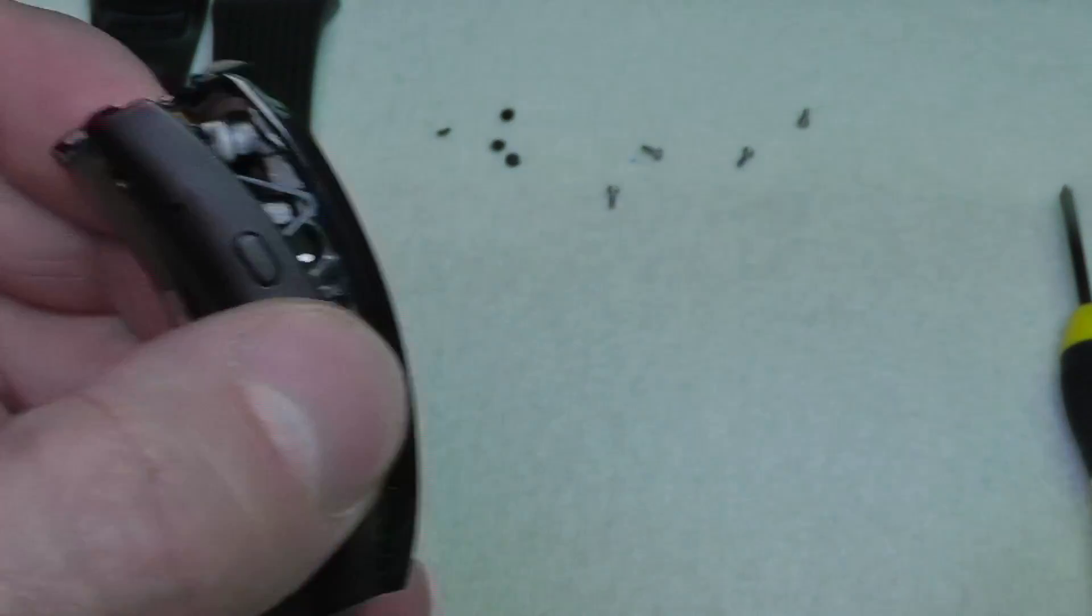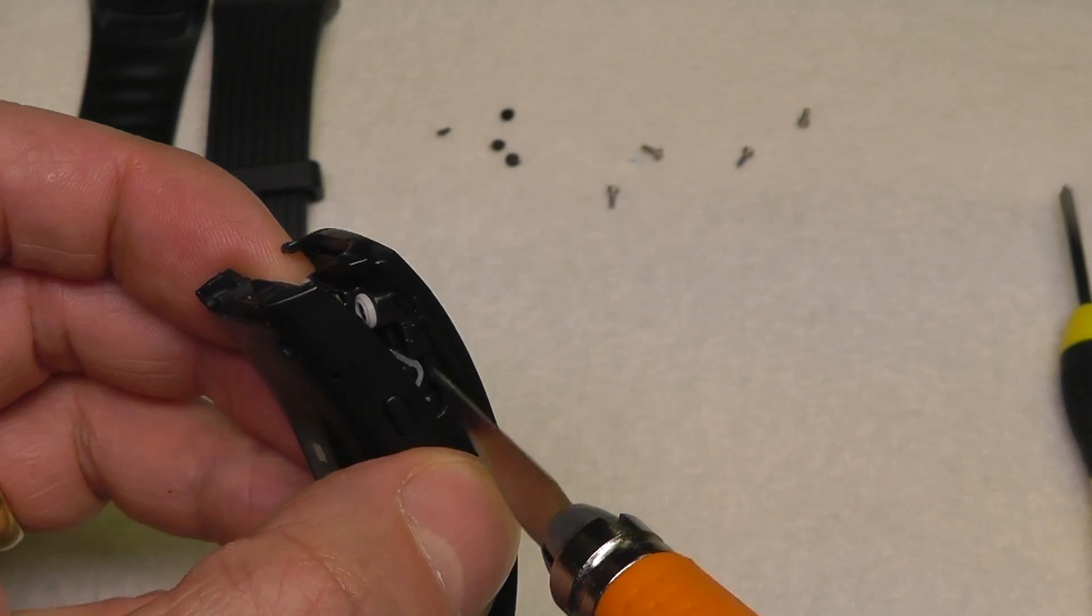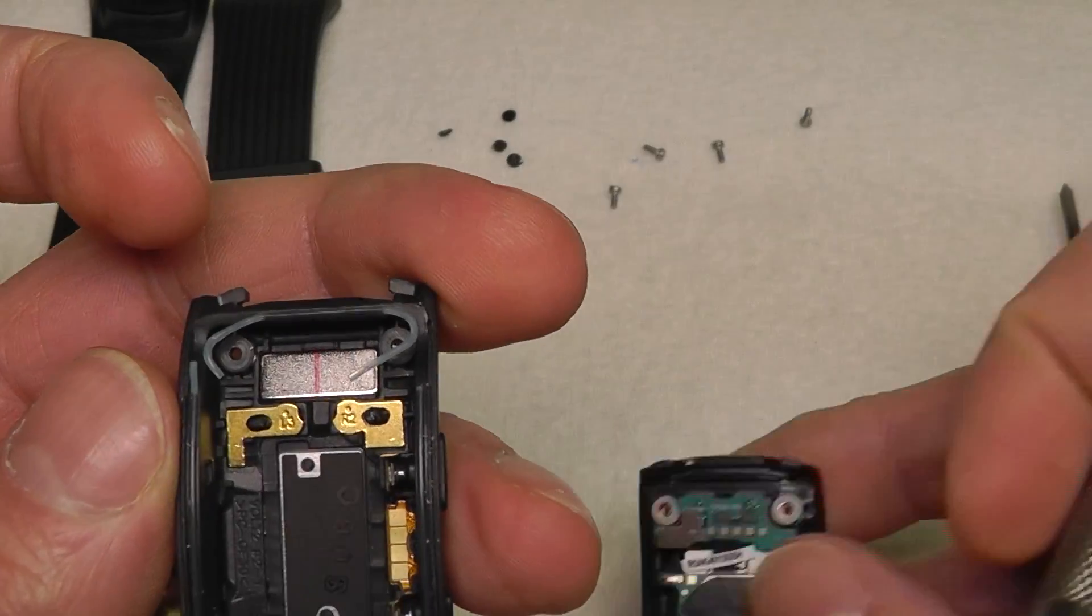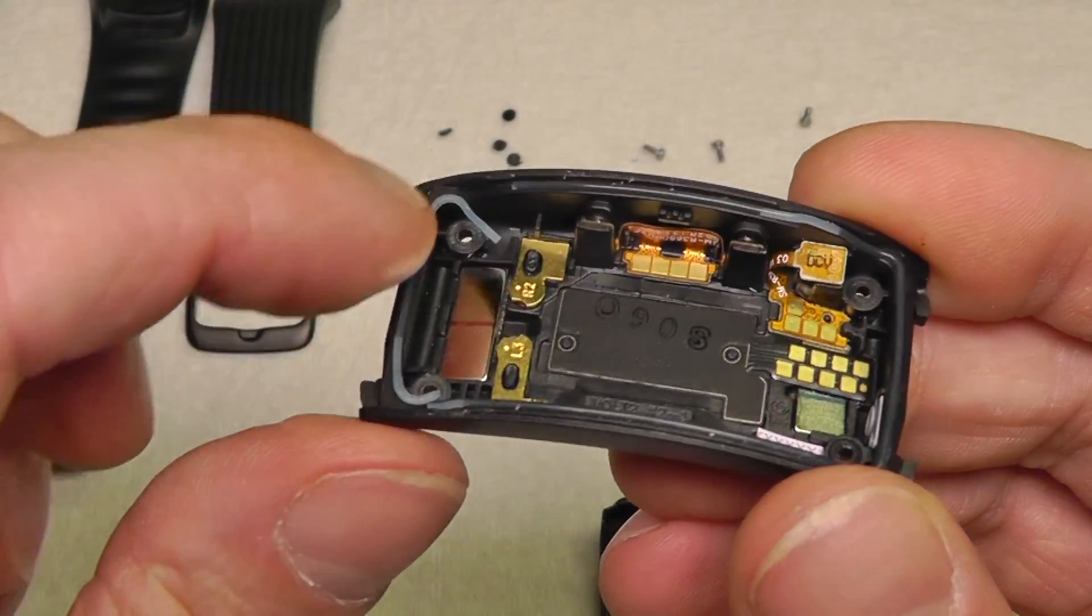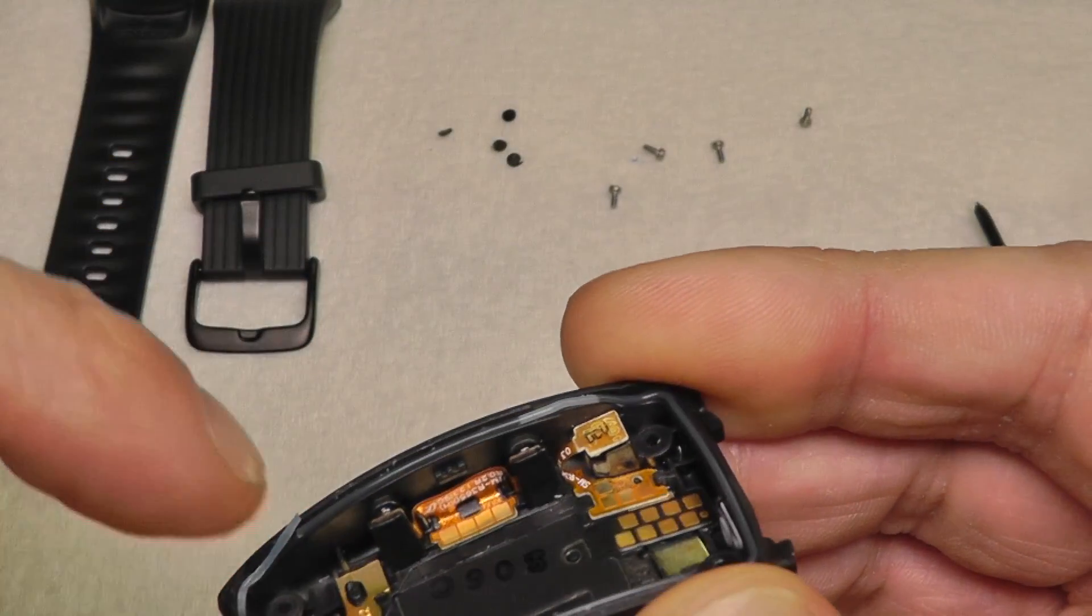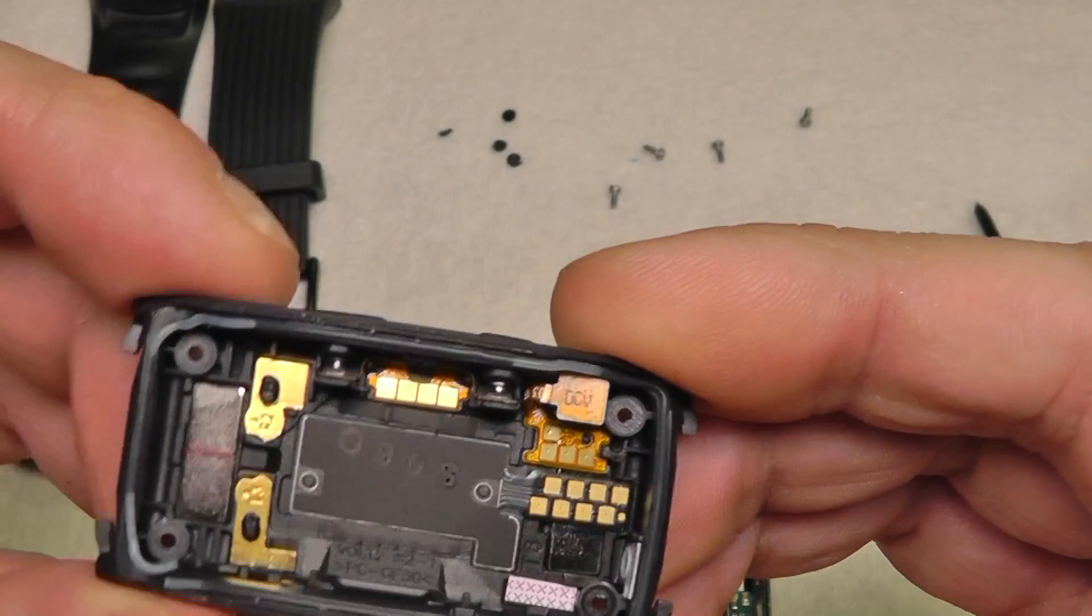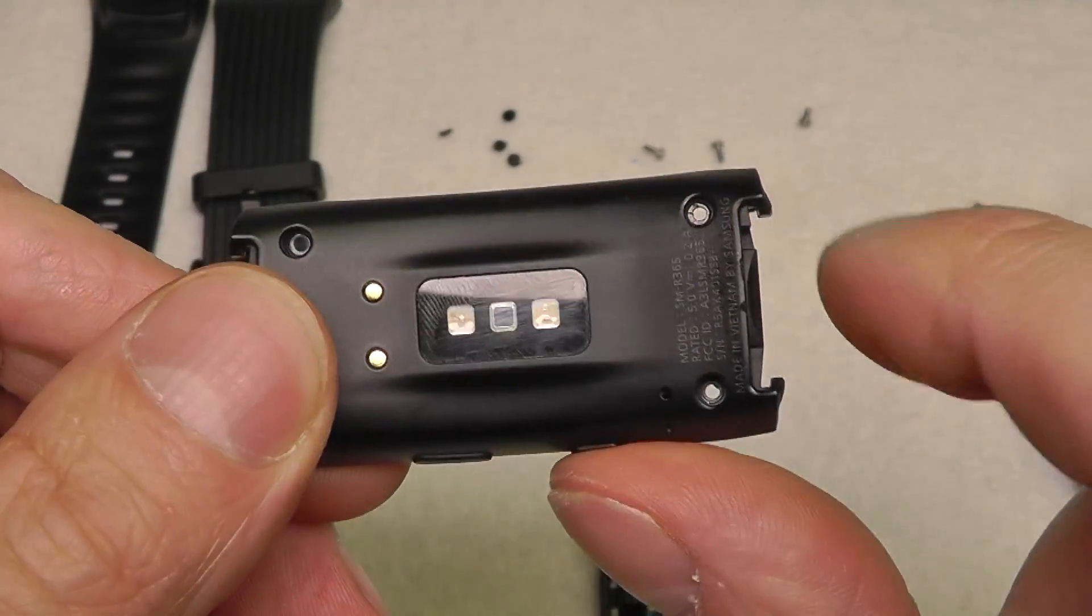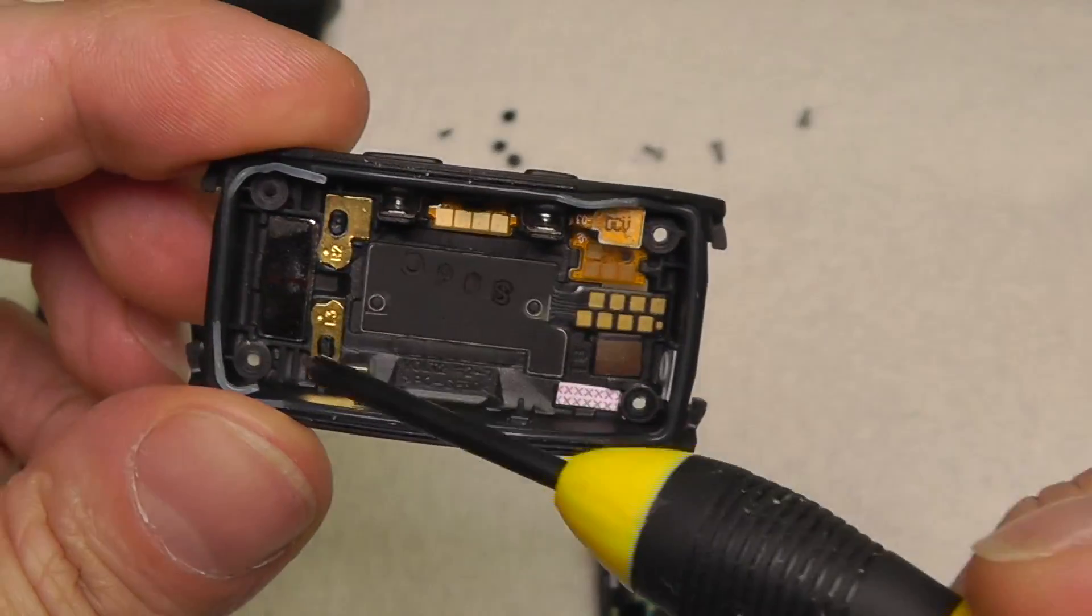You can see that here. I'm using my little scalpel to detach those. Let's first have a look at the bottom side. There you can see a couple of contacts, the sensors, and the charging ports.